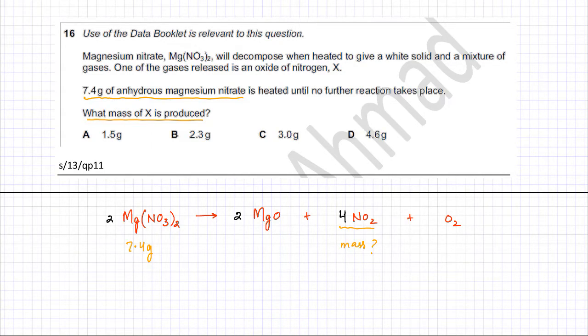The following question deals with the decomposition of magnesium nitrate. The question states that magnesium nitrate will decompose when heated to give a white solid and a mixture of gases. I have written the equation for decomposition of magnesium nitrate and it's going to produce magnesium oxide, NO2 and O2 gas, and I have balanced the reaction as well.